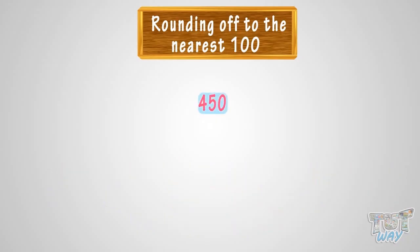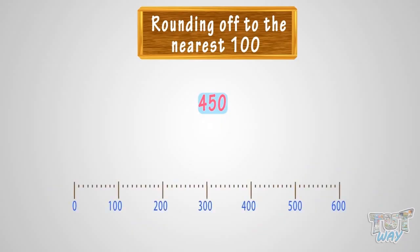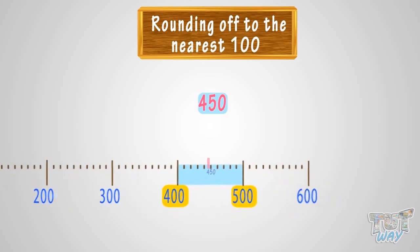We have to round 450 to the nearest 100. Let's see where we can fit 450 on this number line — it is somewhere between 400 and 500. The number is on the 50 mark, and that is also rounded up, so we will round it up to 500.